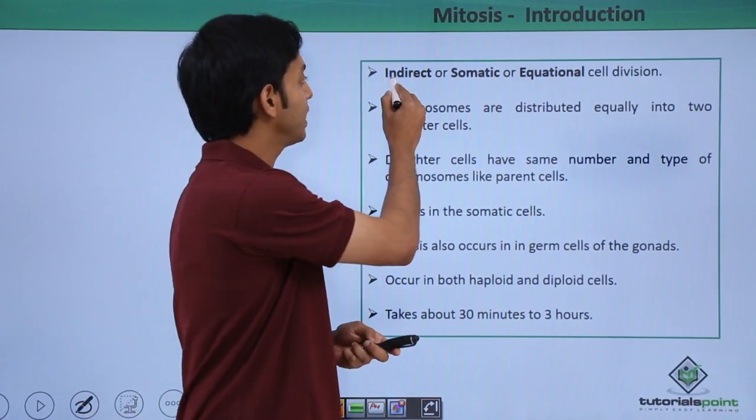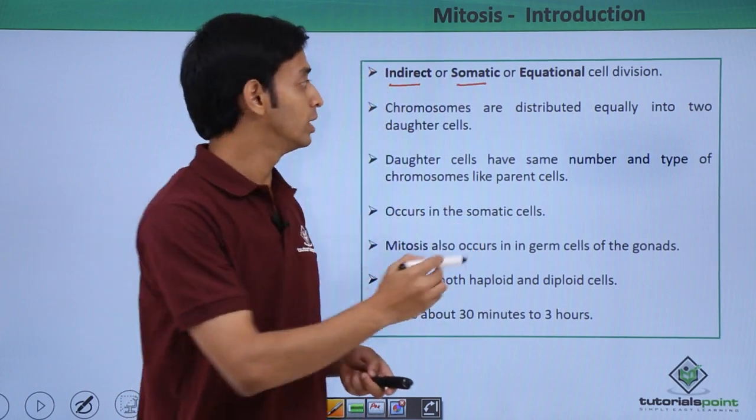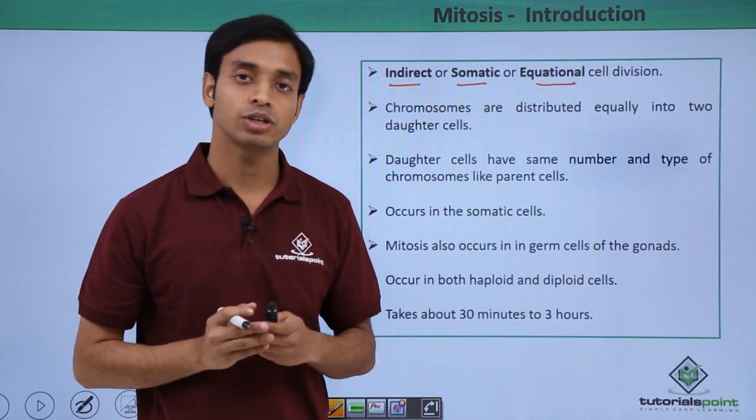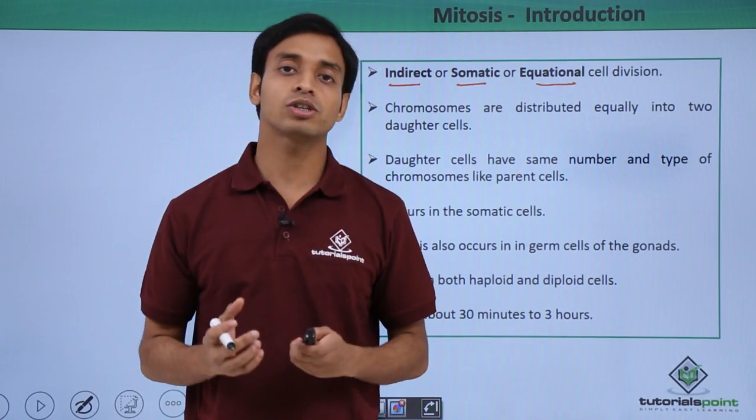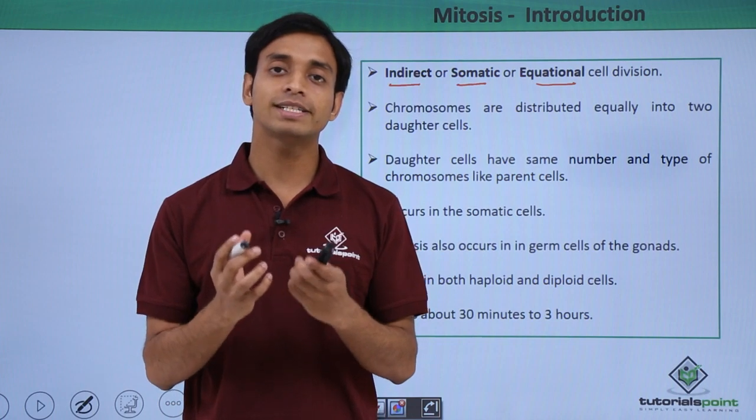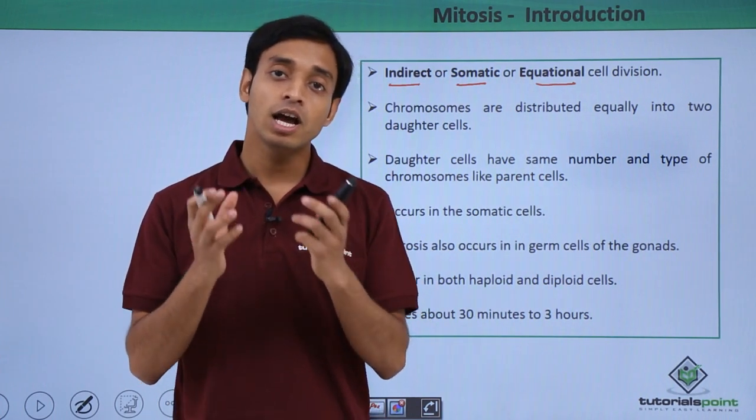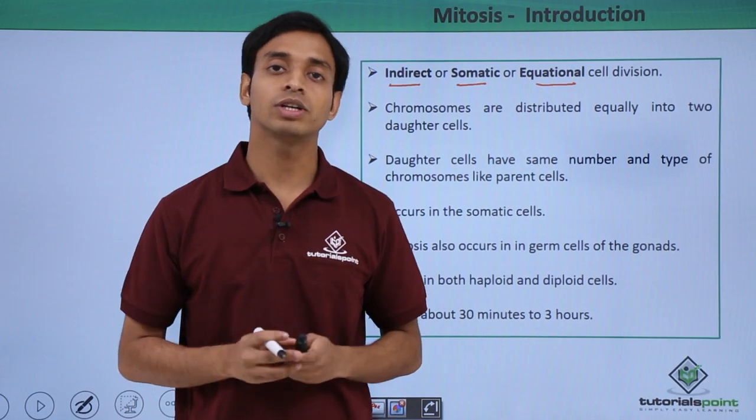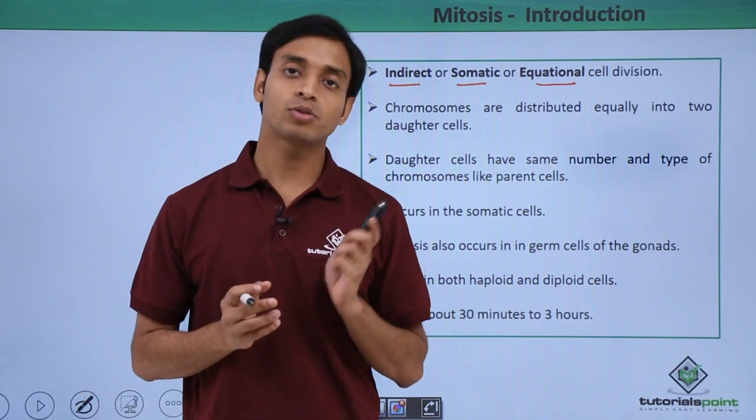Mitosis is also known as indirect cell division. It is also known as somatic type of cell division and also as equational type of cell division. Why equational? Because after the process of mitosis, it divides into two equal daughter cells. That means they are identical to itself as well as that of the parent. Why somatic cell division? Because this process of mitosis happens in somatic cells.